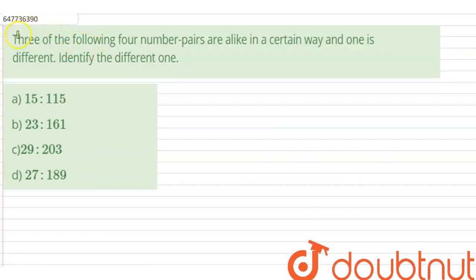Hello students, let us look at the question: three of the following four number pairs are alike in a certain way and one is different.